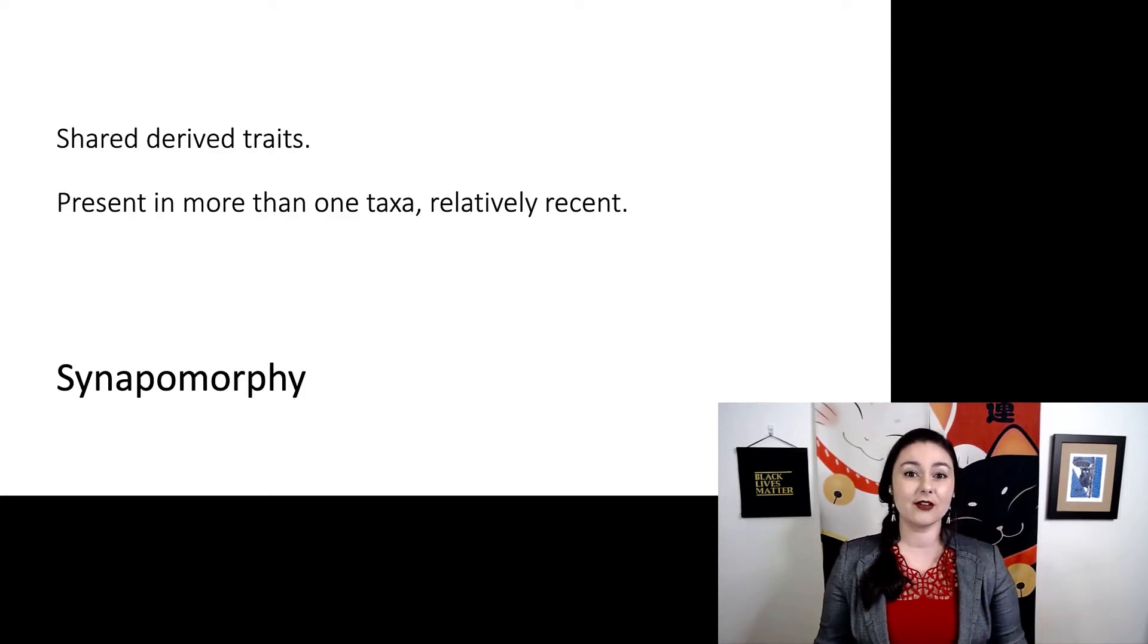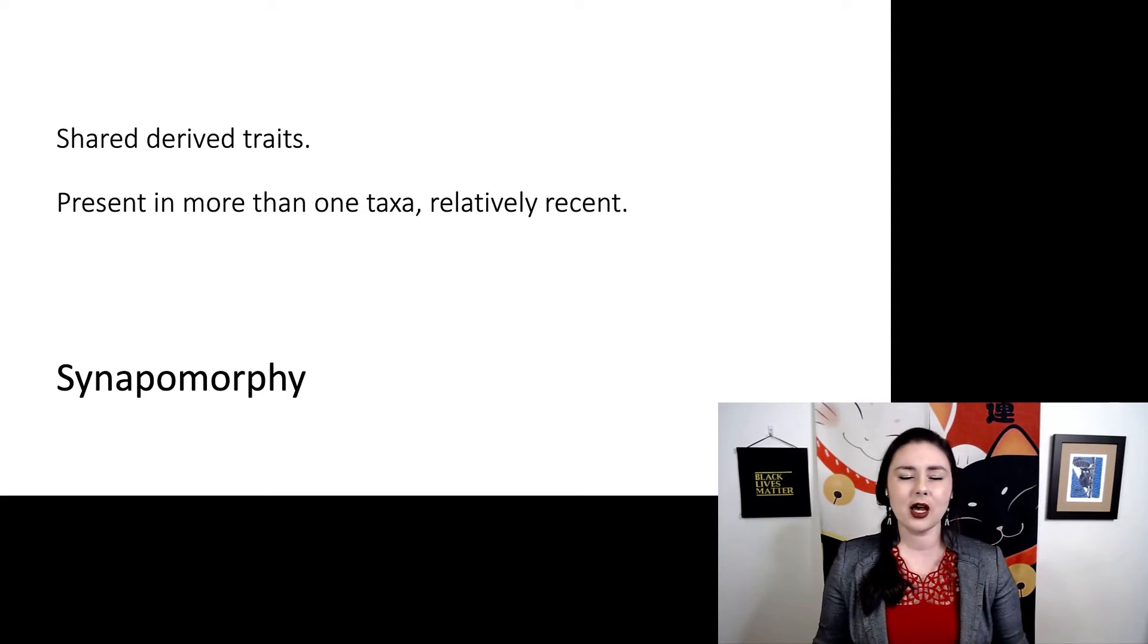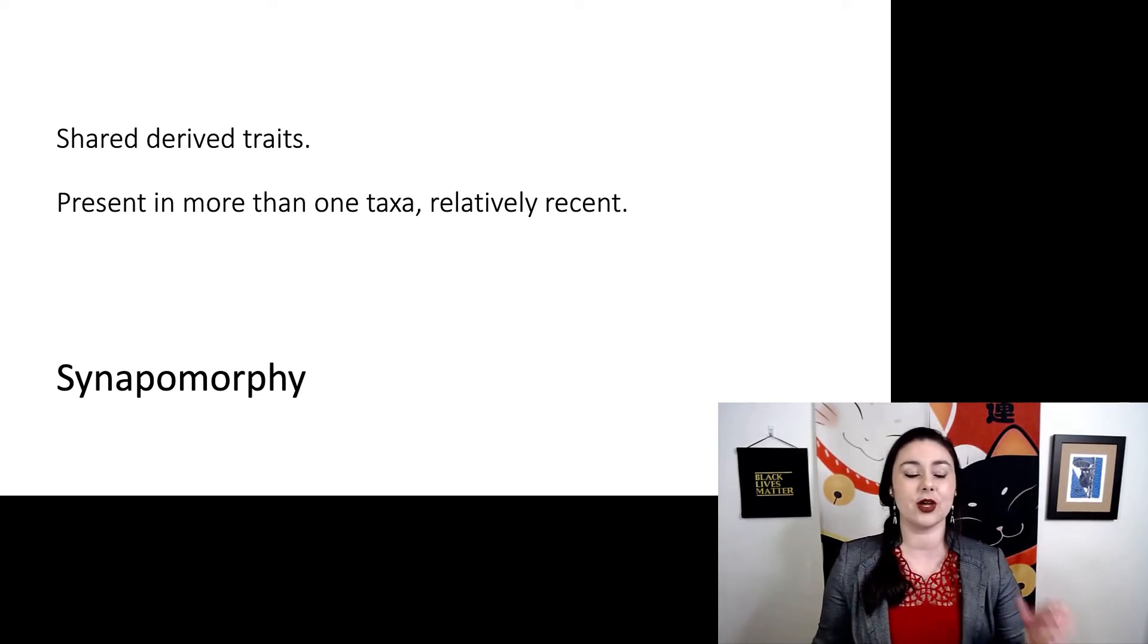But not everything is a symplesiomorphy. We can also have synapomorphies. These are shared derived traits. So again, they are present in more than one taxa, but they are relatively recent. Notice we have the same syn or sim, the N or the M that just depends on what the letter that follows it. But syn or sim mean together. Apo means new and morph means form. So a shared new form or morphology.